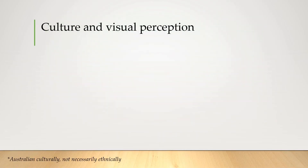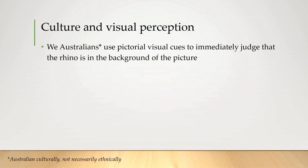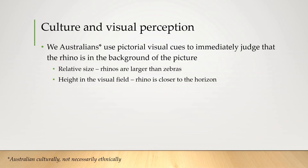You see, I, as an Australian, without realizing that I'm doing it, just automatically use pictorial visual cues to judge that that rhino must be in the background of the picture. My brain's using things like relative size and height in the visual field to figure out what's in front and what's behind.